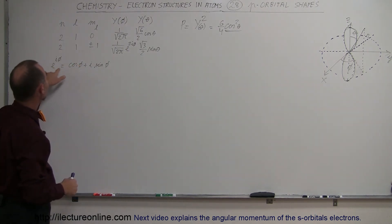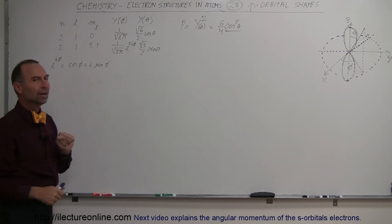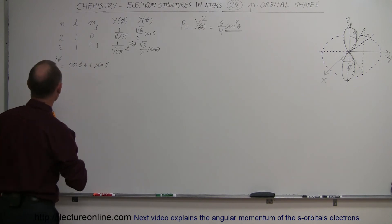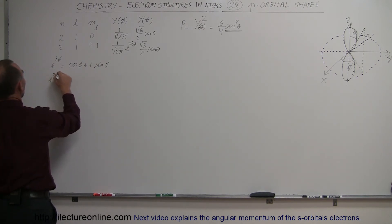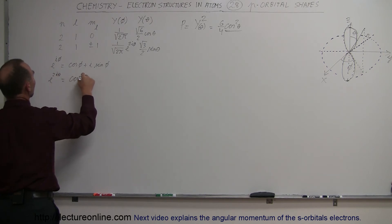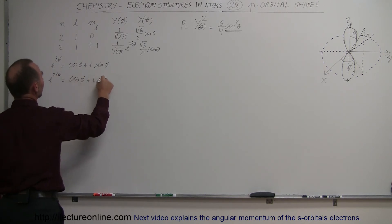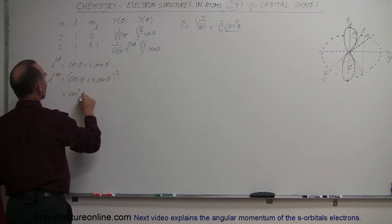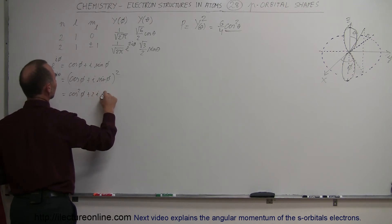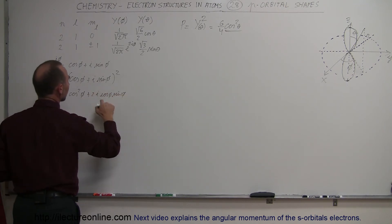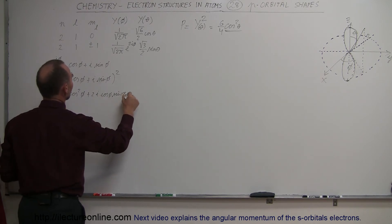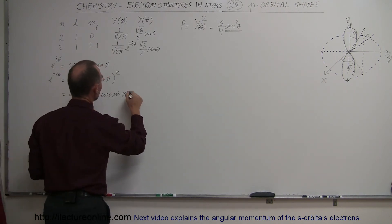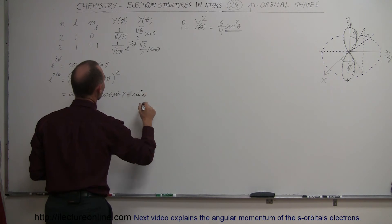The definition of e to the i phi is cosine of phi plus i times the sine of phi. To find the probability, we square that expression. So e to the 2i phi equals cosine squared of phi plus 2i times cosine of phi times sine of phi, plus i squared times sine squared of phi. Since i squared is negative 1, that last term becomes negative sine squared of phi.